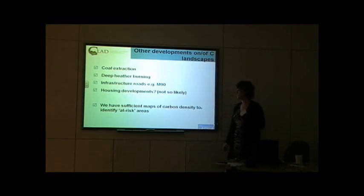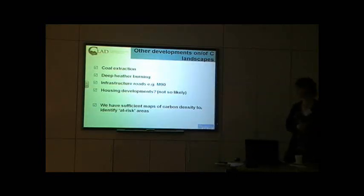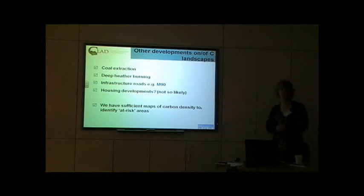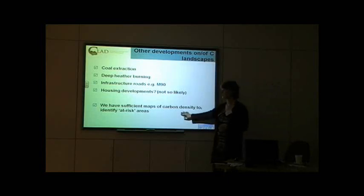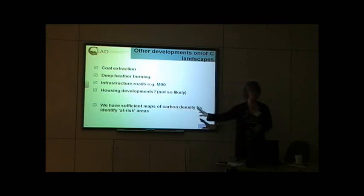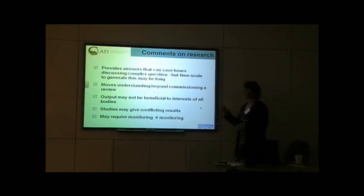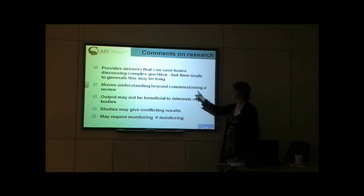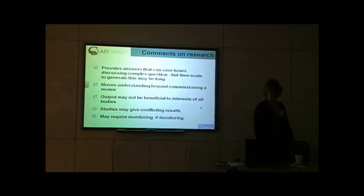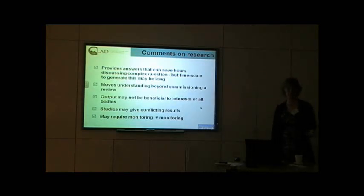One of the things we should have, through efforts of bodies like the Macaulay Institute, are maps of carbon density that can identify where at-risk areas are. If a development is about to take place on a carbon-rich landscape, we could assess whether it is likely to have a significantly deleterious effect on the capacity of that landscape to store carbon. The advantage of funding research through such a levy is that we believe having that information can provide answers that would save hours of complex debate.